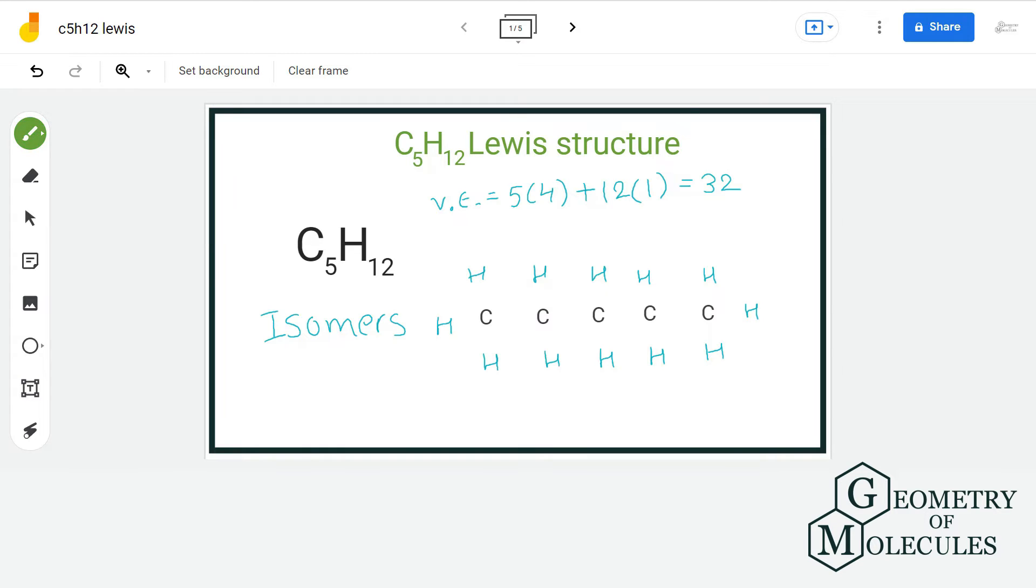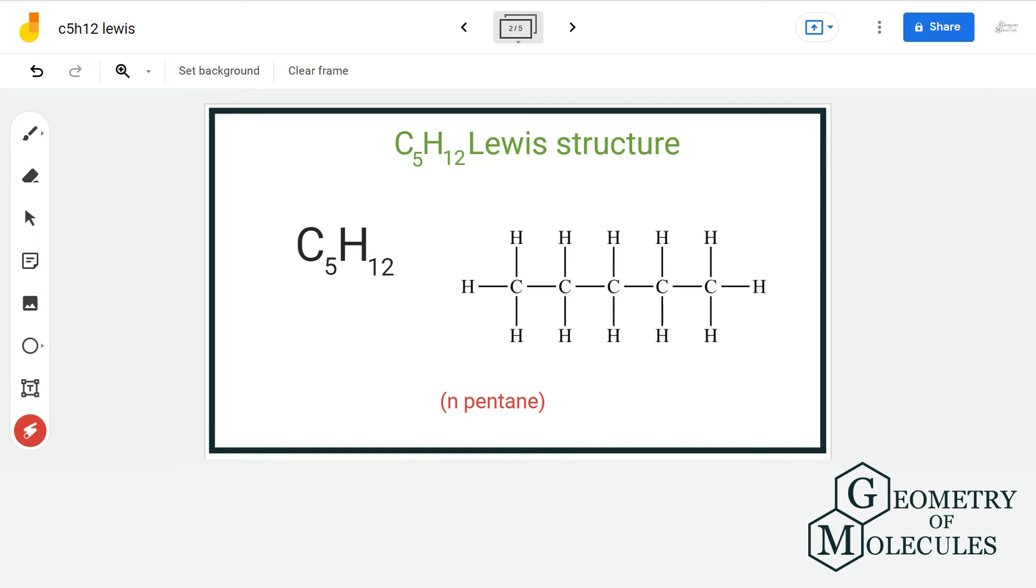Now, we will place electron pair in between each atom for bond formation. Doing that, we have used all our valence electrons and each atom in this Lewis structure has complete outer shell. So, this is the final Lewis structure of pentane.